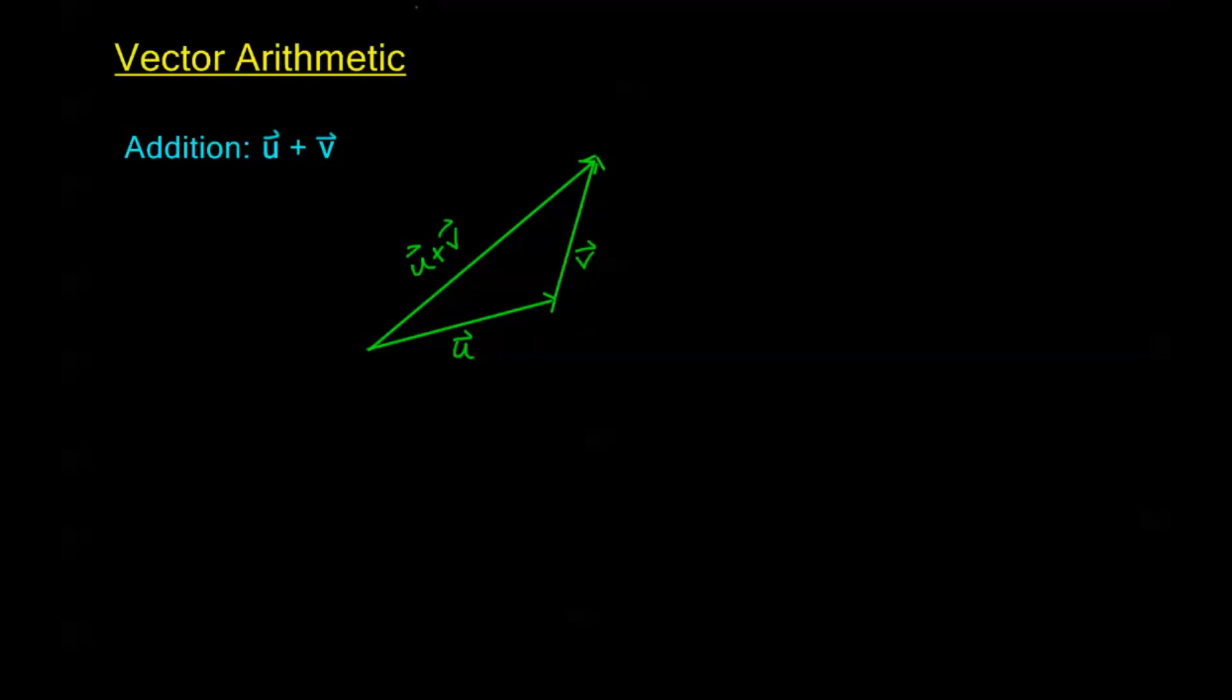And this resultant displacement is our sum u plus v. Now there's another way to draw this instead of drawing u and then v. Sometimes we'll draw, let's say this is my u, and I draw v with the same vertex or the same initial point, so I have my u down here, and then up here this is my v.